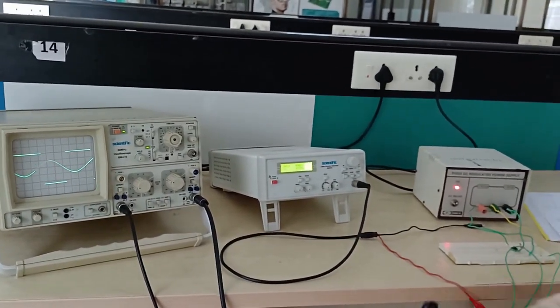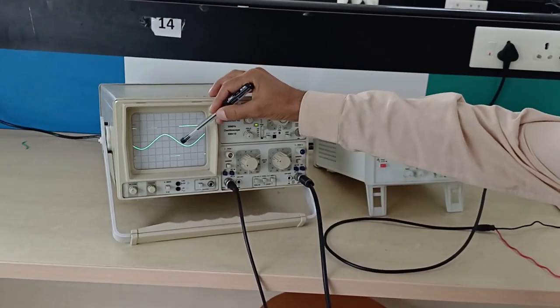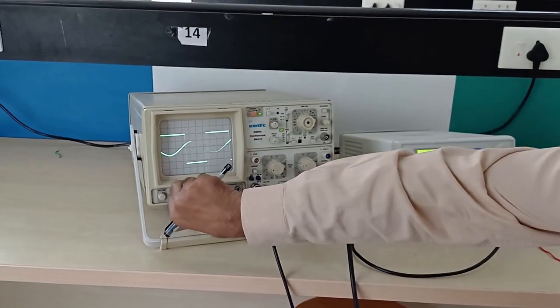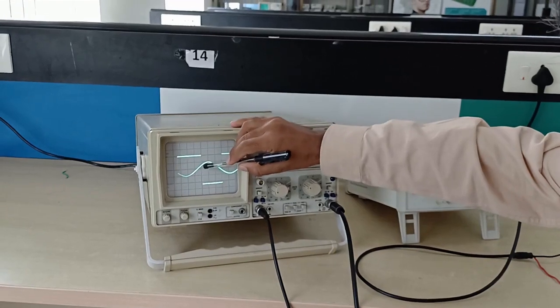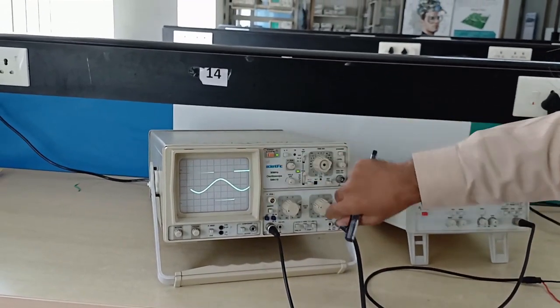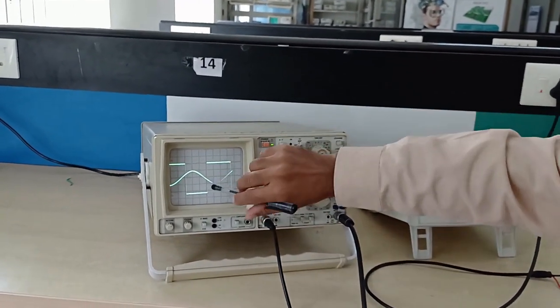Now you can see the UTP and LTP where the waveform is UTP. Here you can see from 0, 0.2, 0.4, 0.6. 0.6 into 2, 1.2 volts is UTP.